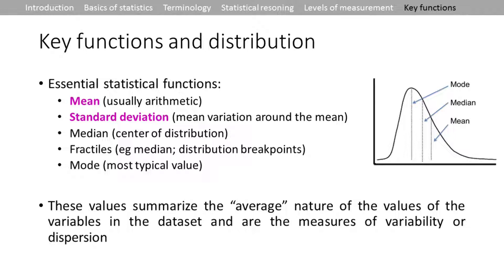The essential key functions are: the mean (arithmetic mean), standard deviation (variation around the mean), median (center of the distribution), fractiles such as distribution break points (how the distribution is evenly split), and the mode (the most typical value). These values summarize the average nature of variables and measure the variability or dispersion of the distribution.